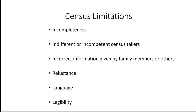Some of the limitations of census data include incompleteness. Early on, the time limits placed on the census takers meant that sometimes there was not enough time to get to every household, or the census takers simply missed them. Indifferent or incompetent personnel — some were just careless, many were not well-qualified and did not meet the standards. It was an extremely low-paying job, which did not attract many well-qualified people.